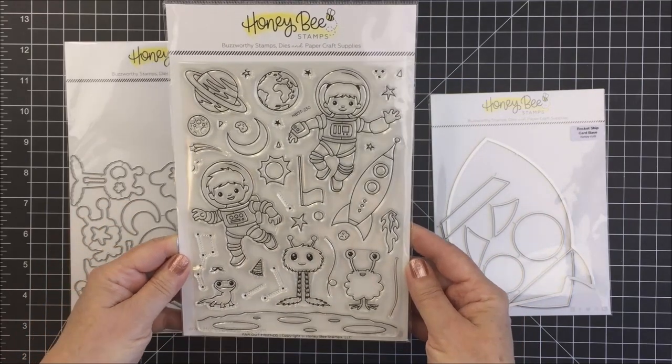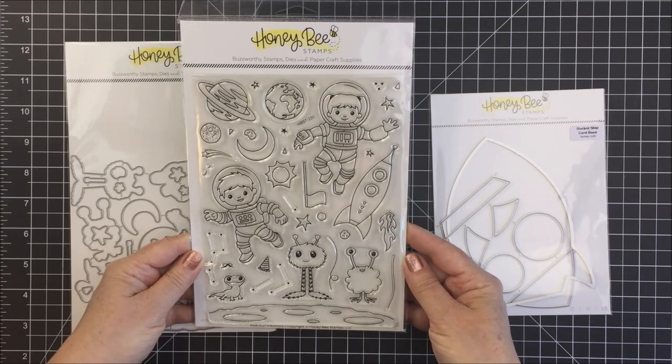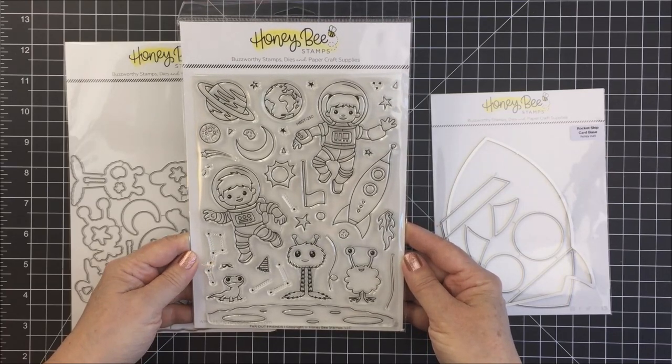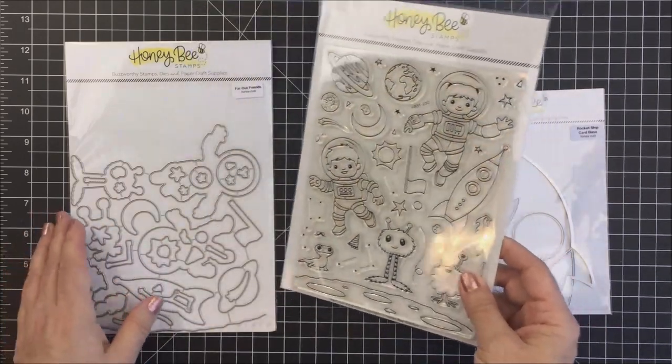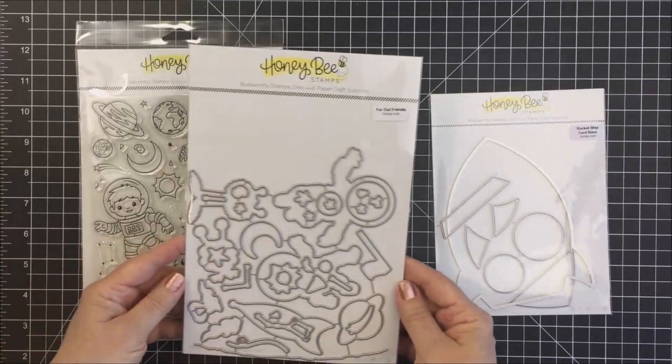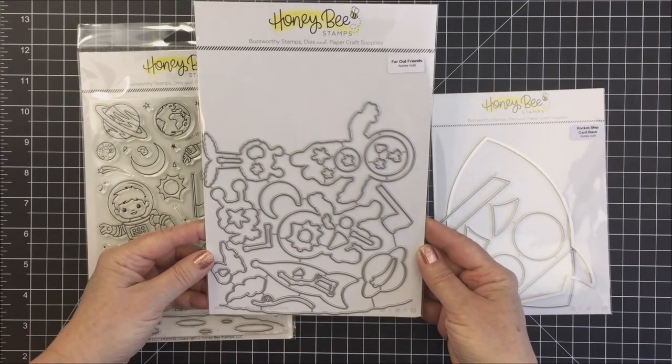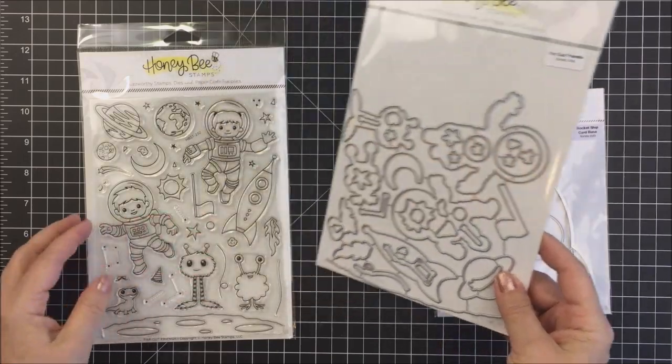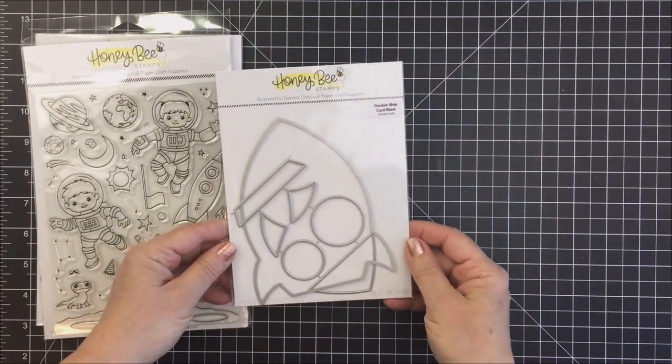This is a huge set that includes two really cute little astronauts, a spaceship, some little space creatures, some planets and the moon, and all sorts of really fun images. You can also purchase the Honey Cut dies, a full set of dies for this stamp set as well.